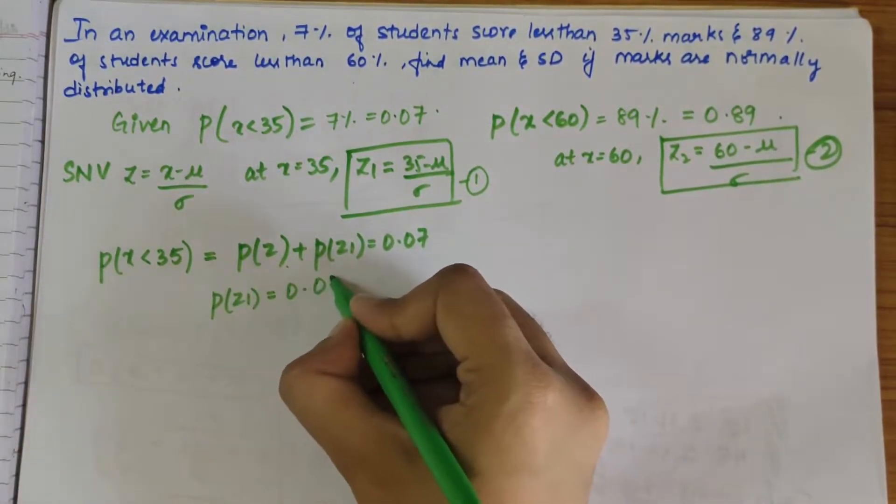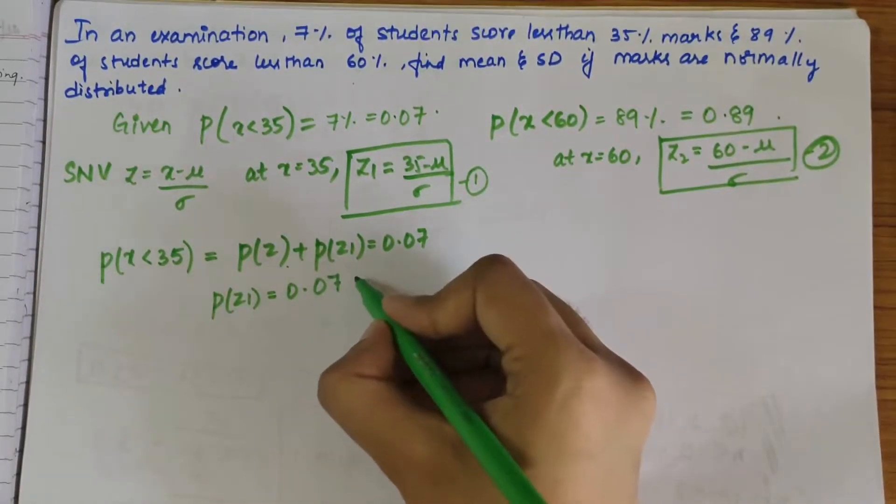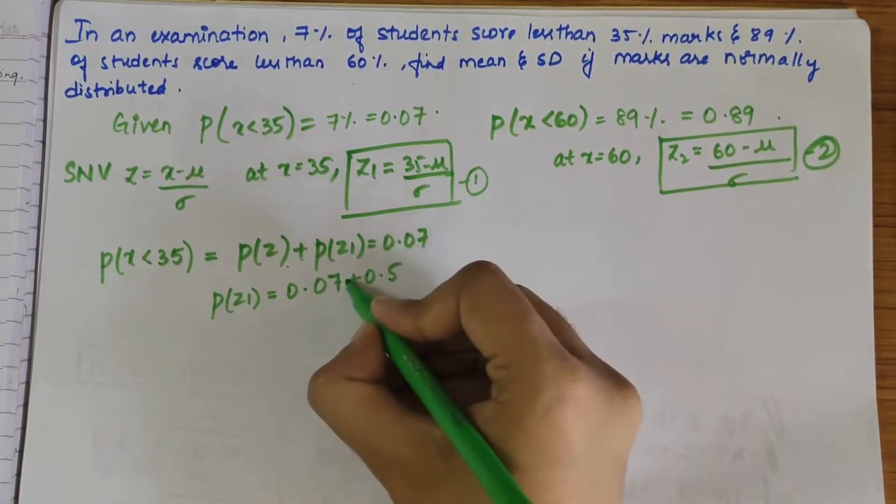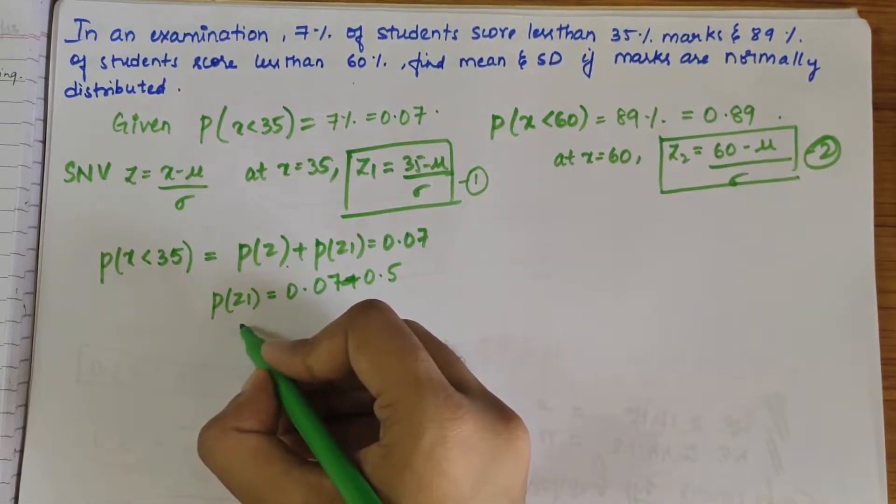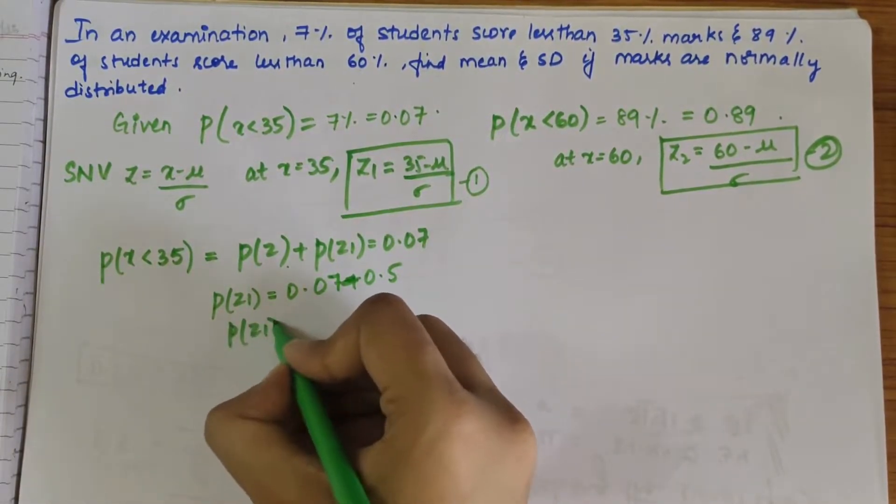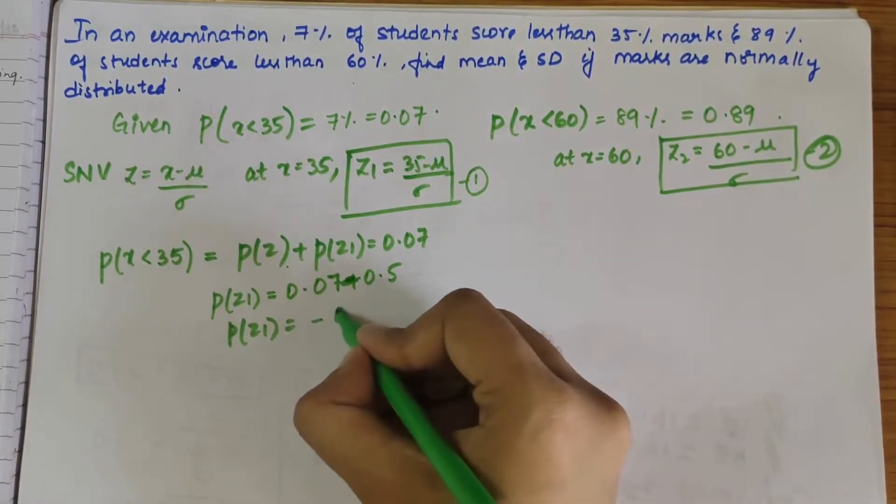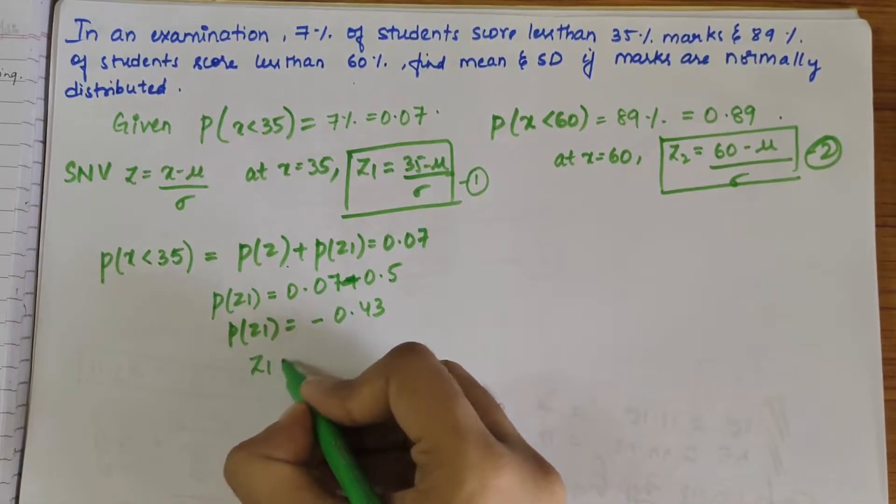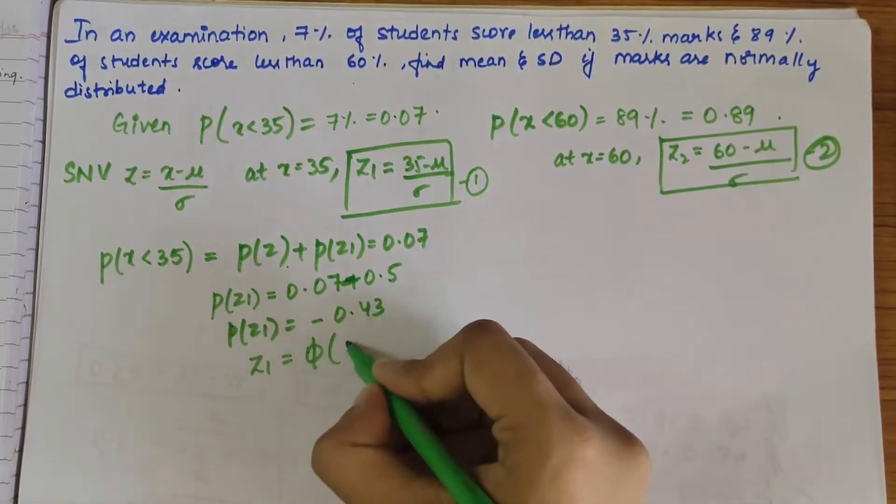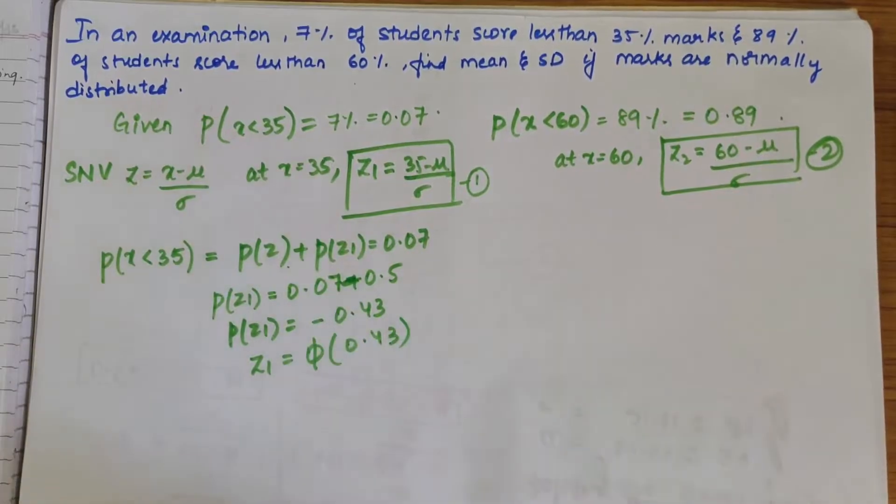0.07 plus 0.5 minus 0.5, so that can be further written as P(Z1) is equal to minus 0.43, which can be further written as Z1 is equal to phi of 0.43.